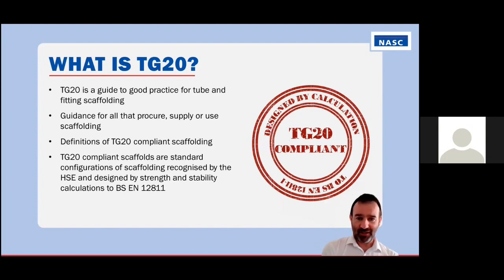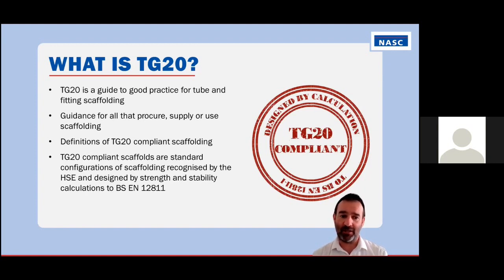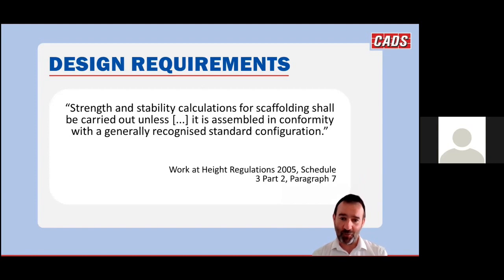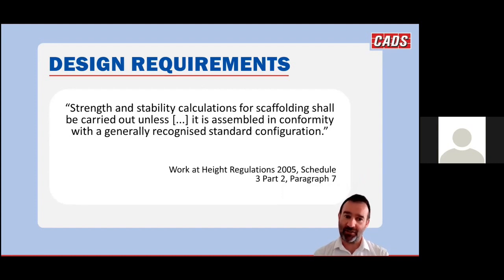TG20 is two things really. It's a guide to good practice for tube and fitting scaffolding, aimed at anybody involved in the scaffolding or construction industry who uses scaffolding. But it also includes definitions of TG20 compliant scaffolding — standard configurations calculated by design, recognised by the HSE, and designed to the Eurocode BSEN 12811. This all comes back to the work at height regulations, which state that strength and stability calculations are required unless scaffolding is assembled in conformity with a generally recognised standard configuration. That's what TG20 provides.